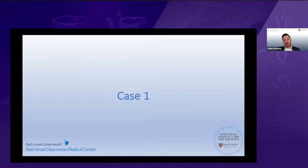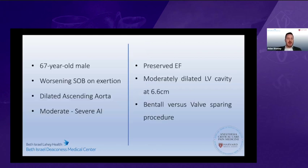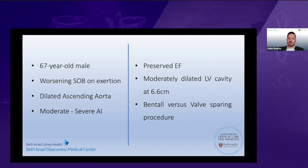Our first case is a 67-year-old male patient presenting with worsening shortness of breath on exertion. He had a known dilated ascending aorta with at least moderate-to-severe aortic insufficiency, preserved ejection fraction, and a moderately dilated left ventricle measuring 6.6 centimeters. The question was whether to do a Bentall versus a valve-sparing procedure.